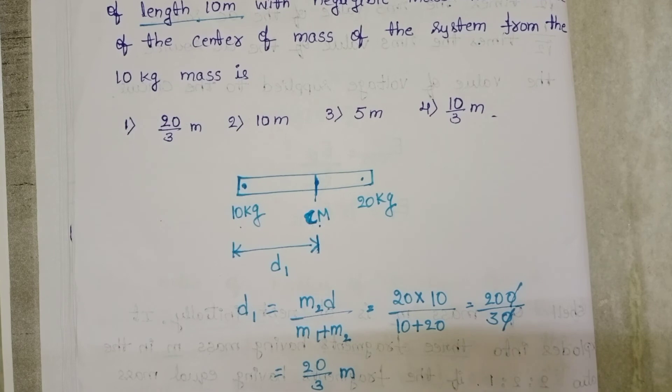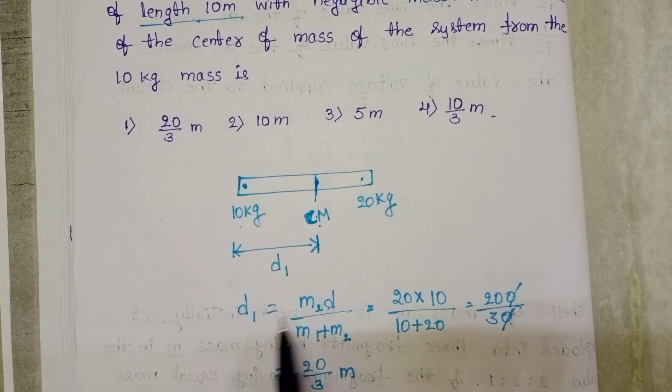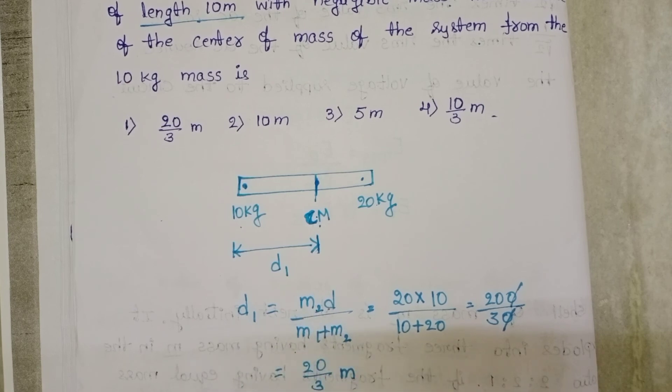In the same question, when we want the distance from the 20 kg mass, the formula becomes d2 equals m1 d divided by m1 plus m2.